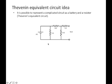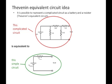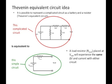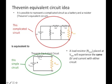Essentially, imagine that you have some complicated situation, and that maybe you're going to measure some V out over here, or you're going to add some circuit element over there. The idea is that you can take this complicated circuit and replace it with some simpler circuit, and in the end, it's equivalent. So if you take a load resistor and place it across V out, those load resistors will experience the same change in potential and the same current no matter which circuit they're in. These two circuits are equivalent, and this simpler circuit is called the Thevenin equivalent circuit.